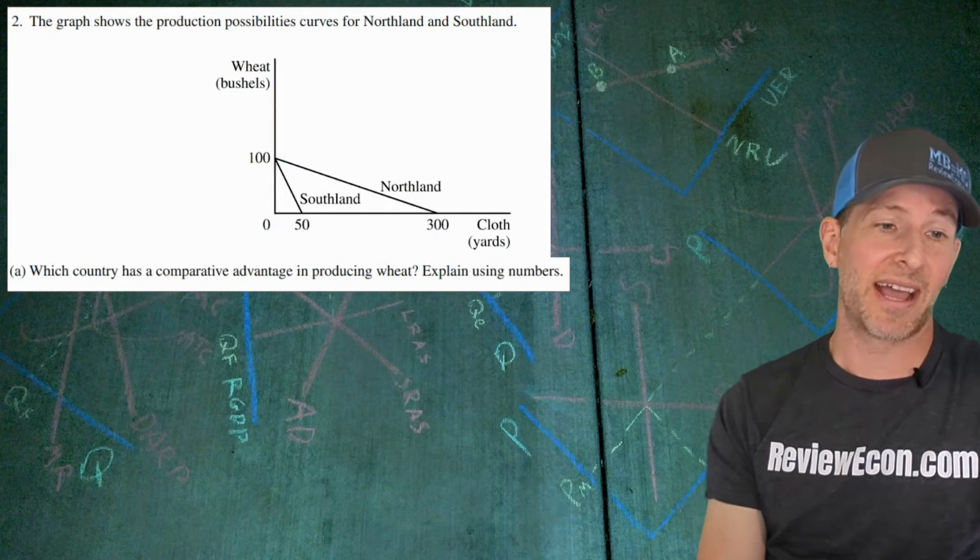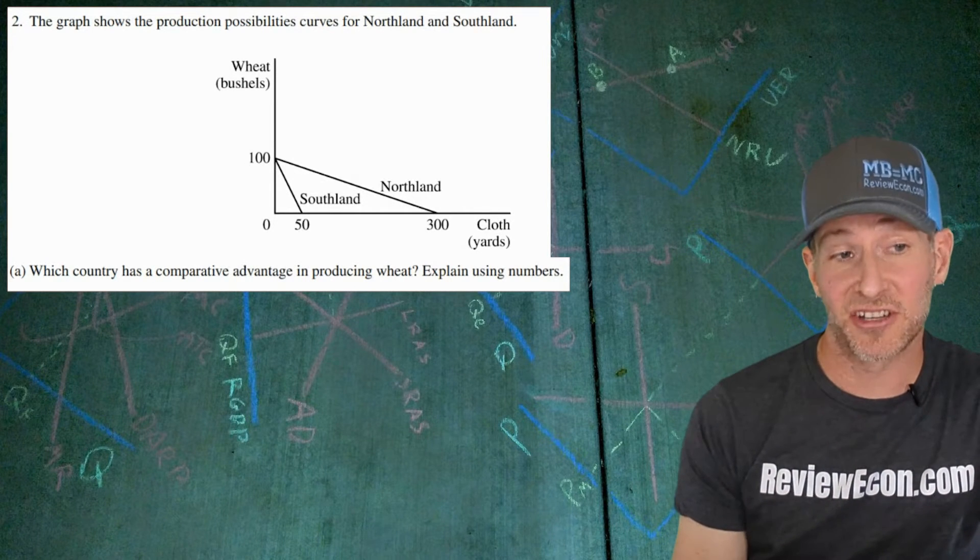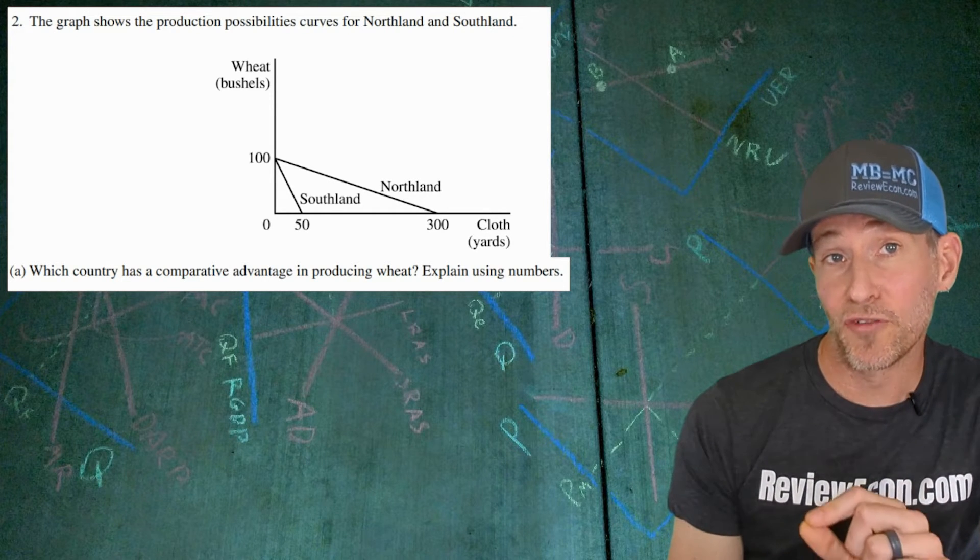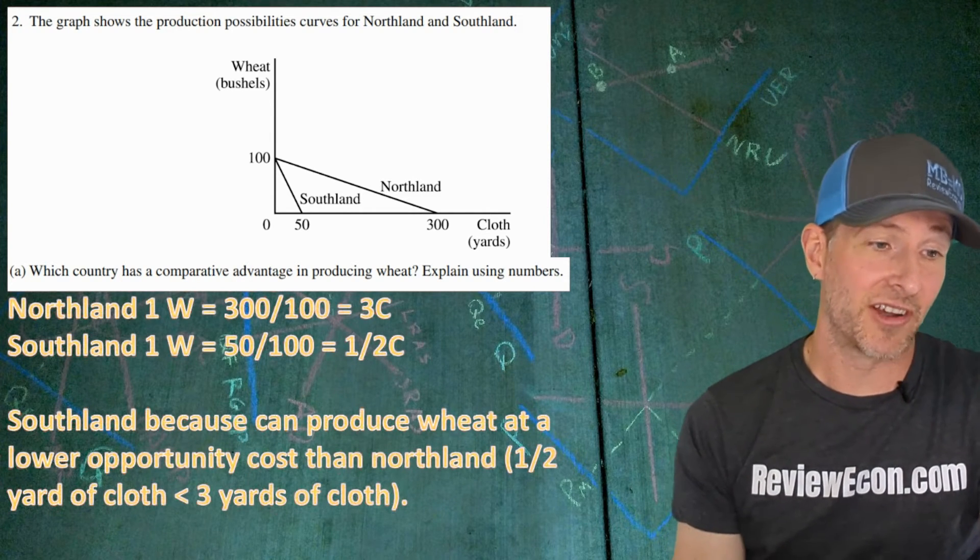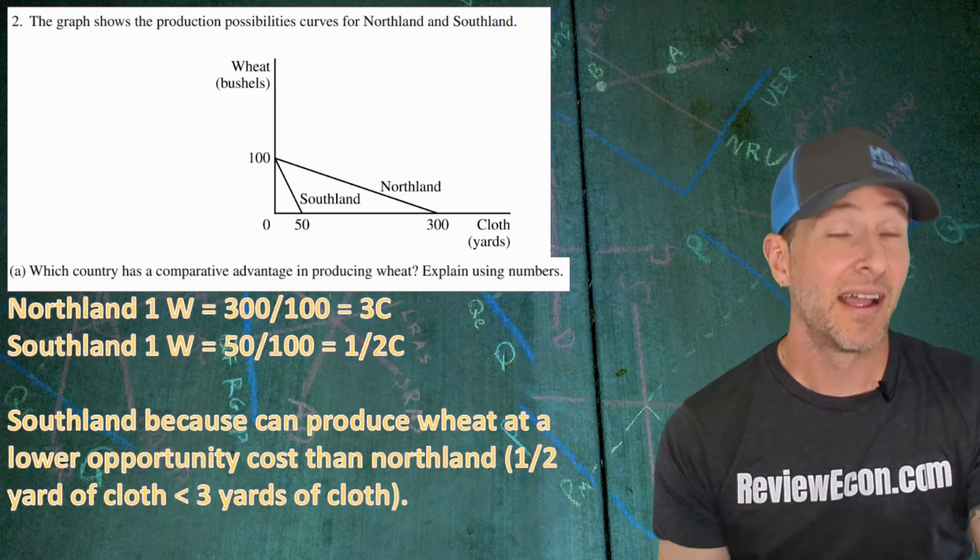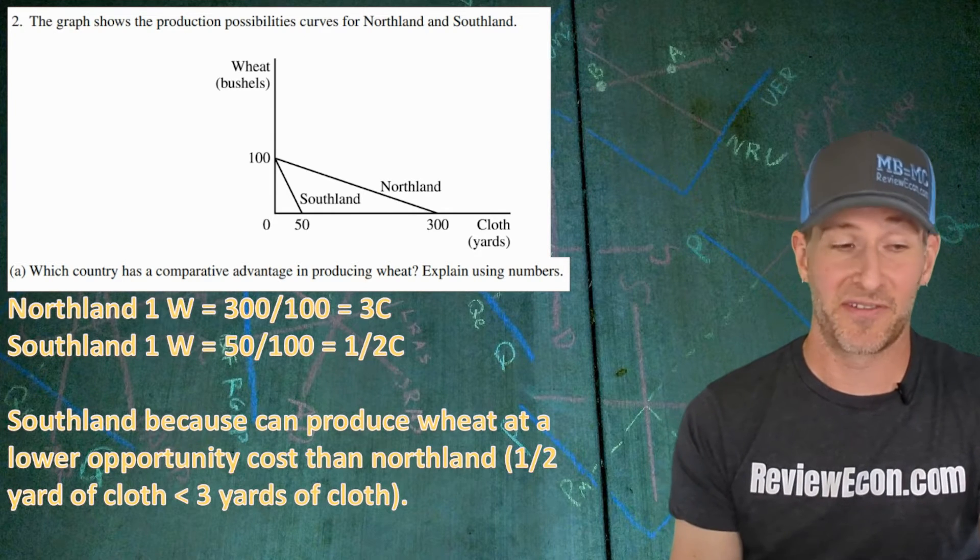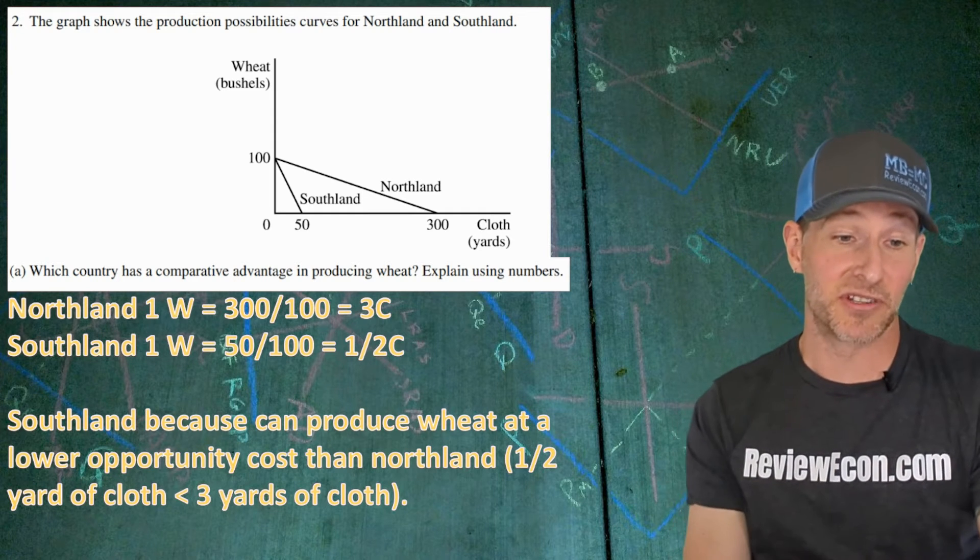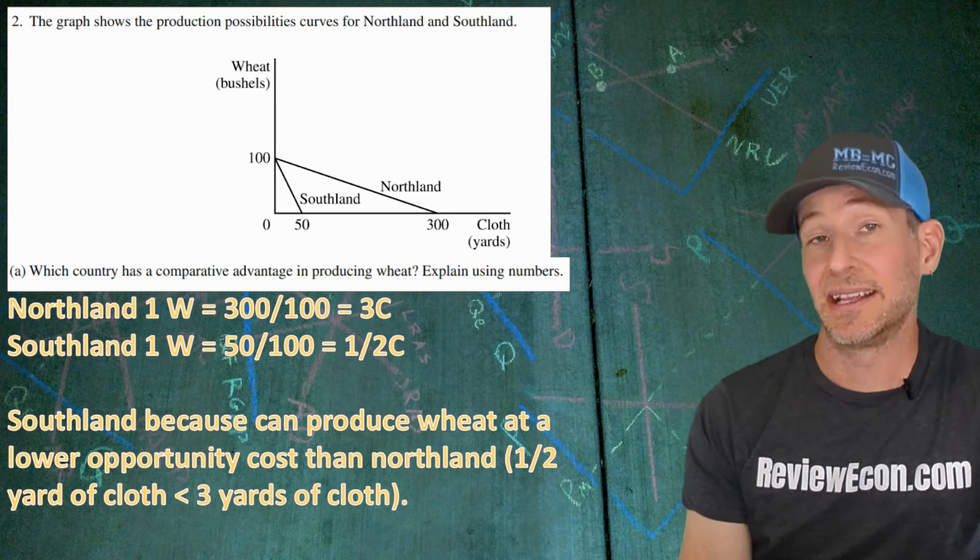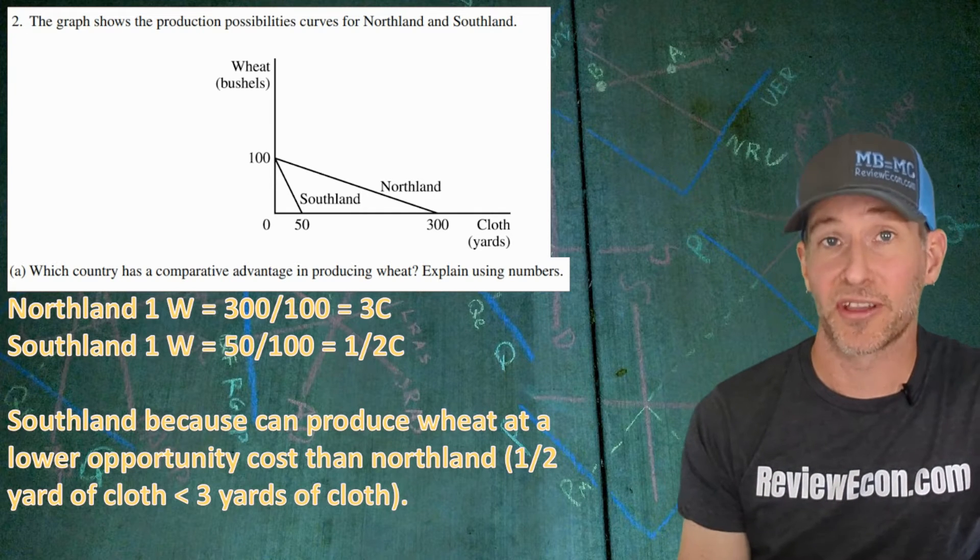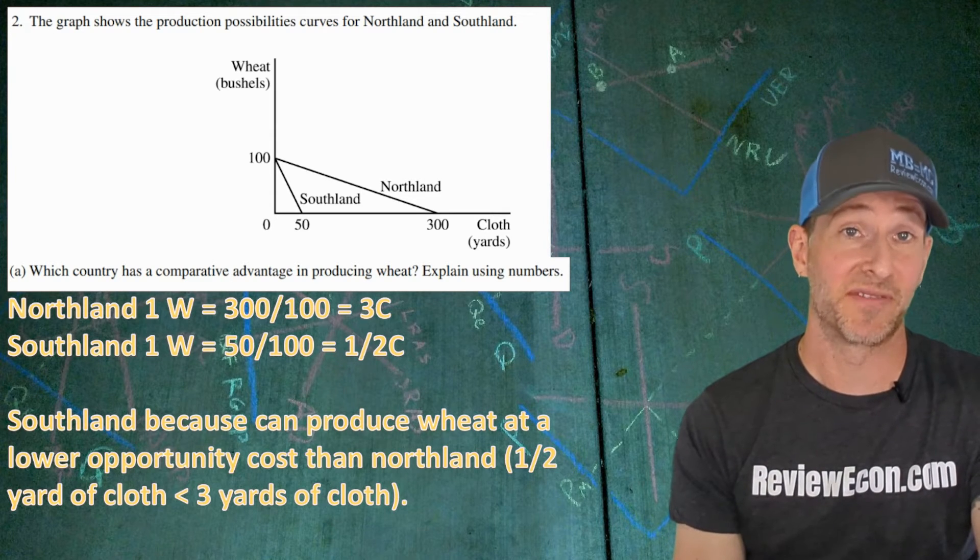Now onto number two, we have a comparative advantage question here. Hopefully you remember the comparative advantage formulas. These are outputs: finished cloth and bushels of wheat. So we're going to use the other over formula. The opportunity cost of A is the numbers we have for the other one divided by the one in question. We have our opportunity cost calculations up there at the top. And the answer is Southland because they can produce wheat at a lower opportunity cost than Northland. You have to use the numbers here: one half yard of cloth is less than three yards of cloth. And those are the opportunity costs that we just calculated. Lower opportunity cost is comparative advantage.